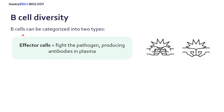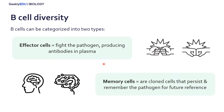B cells can be categorized into two main types. The first are effector cells, which are cells aimed at fighting and killing the pathogen, mainly by producing antibodies. Then we have memory cells. Our adaptive immune system is the part of our immune system that memorizes pathogens, and B cells are really important for this because they help us remember the antigens and the pathogen so that if we see that pathogen a second time we're able to fight it more effectively.